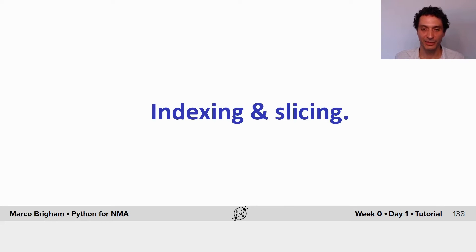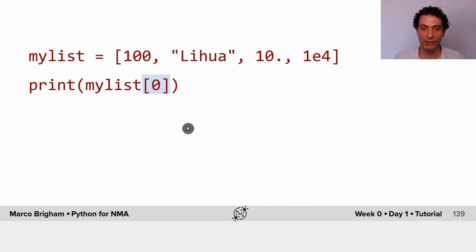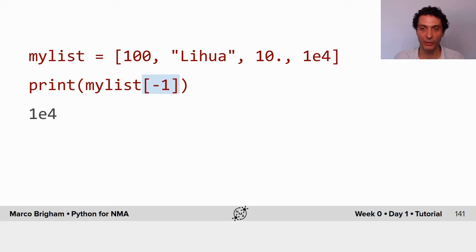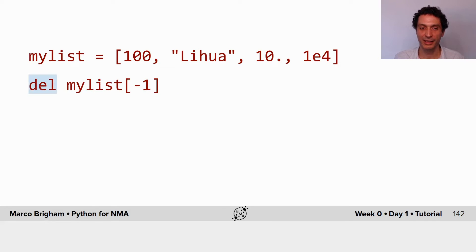Indexing and slicing is really important and useful in Python. We call elements of our lists by their index, starting at zero. The element at index zero from this list is 100. We also have a special notation for position from the end: minus one is the last position, minus two is the second position from the end. To delete one element, use del followed by the list and the element index.